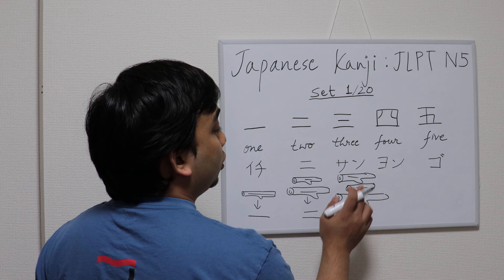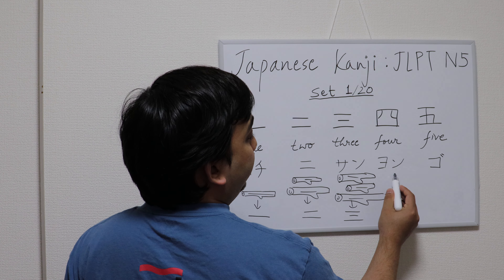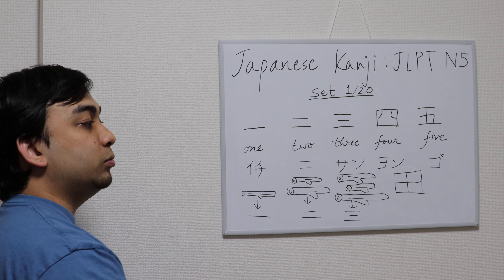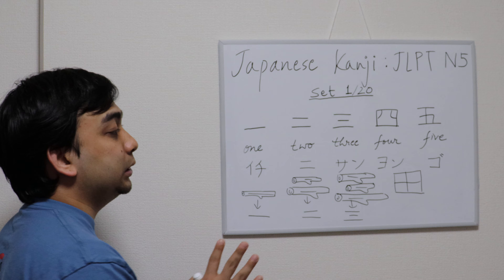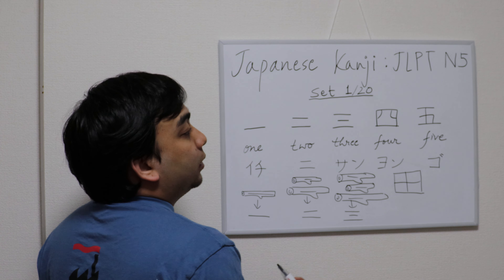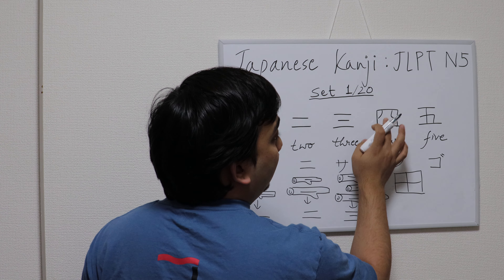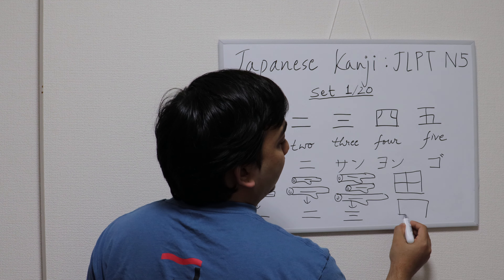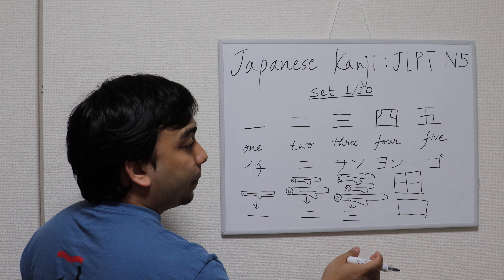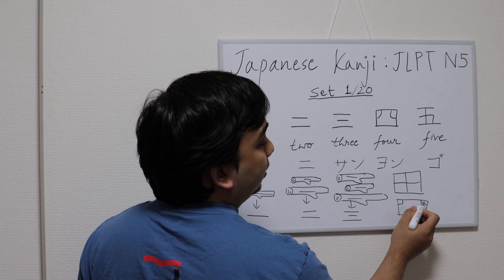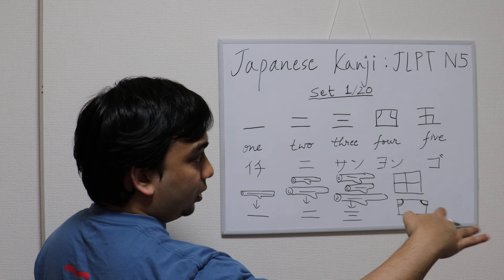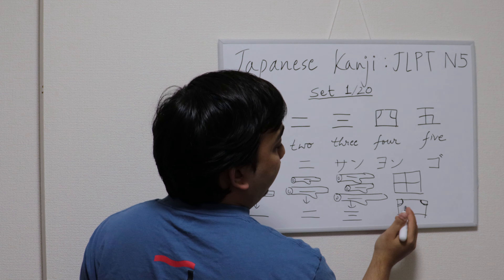Next is yon. When you write yon, you can think of a window, and consider that window has four sides or four corners. So that's how you remember four. An easy way is to consider a rectangle or square shape like this, and maybe these are the curtains that have been dropped left and right like this.